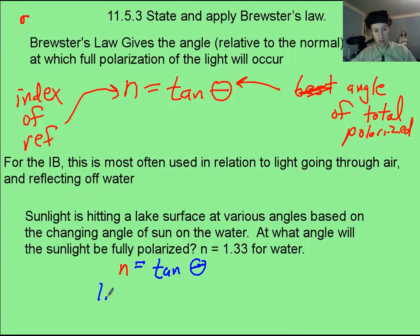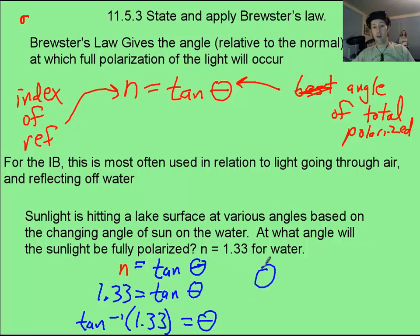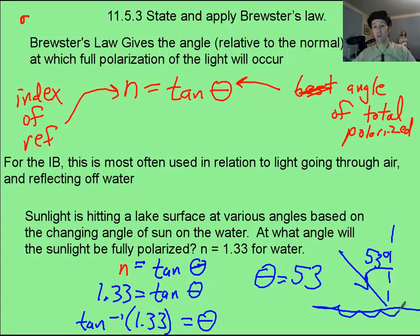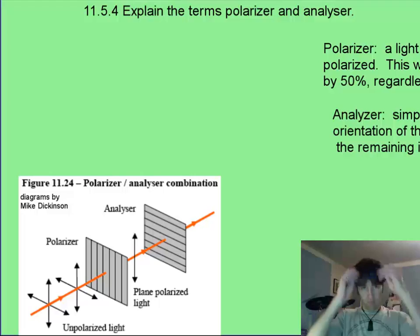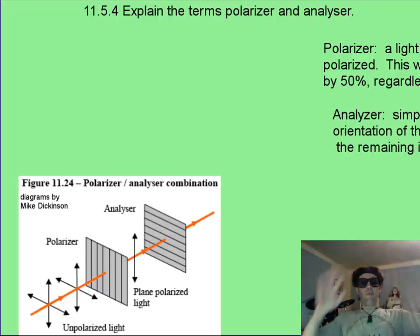Now, we know that n is 1.33 for that of water, and we're looking for the angle in degrees. So we can do inverse tangent of the index of refraction to give us our angle, and you should get an angle of about 53 degrees as measured from the, so that's going to be something like 53 degrees as the light's coming in to hit the water here. Oh, I got my polarizers on.